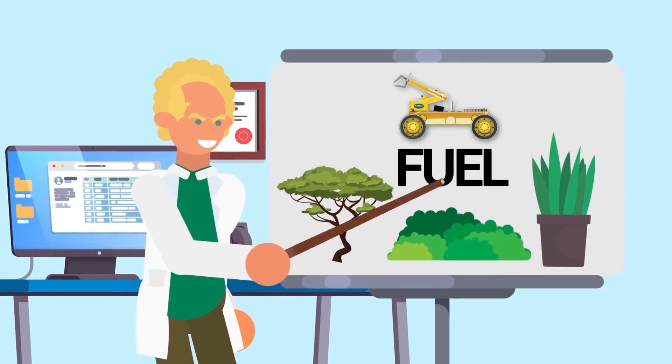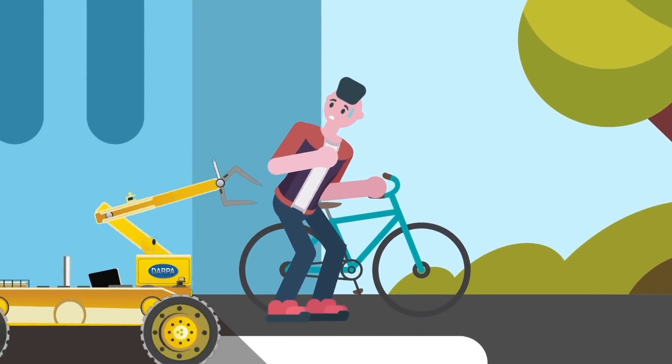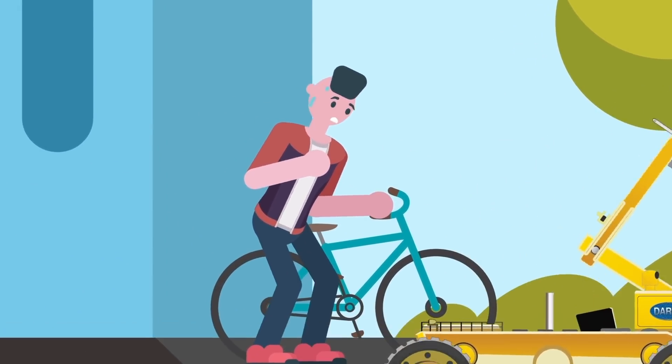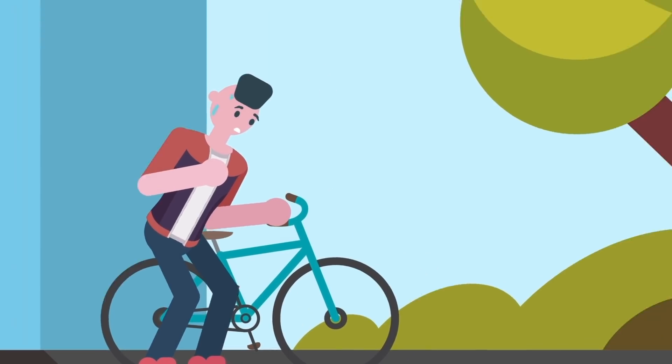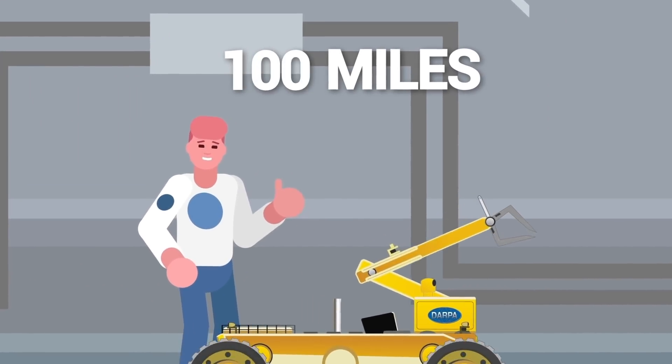Researchers believed that if a spy robot could eat independently to maintain its energy supply, it would be able to carry out missions far longer than both humans and conventional machines. It was believed that the finished machines would be able to travel 100 miles for every 150 pounds of biomass consumed.